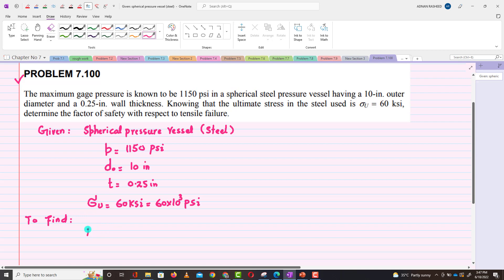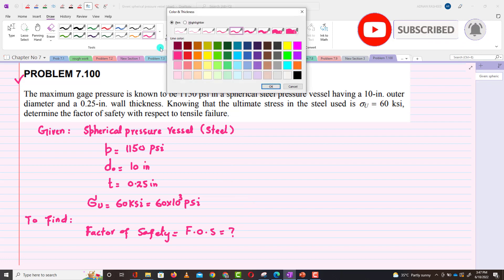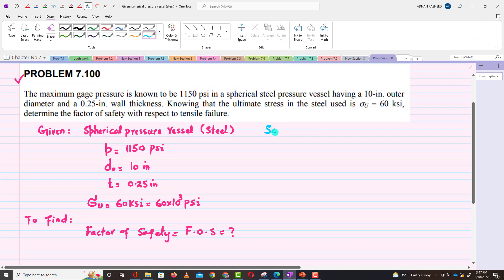We have to find the factor of safety. The factor of safety is equal to σ ultimate divided by σ working, or working stress.